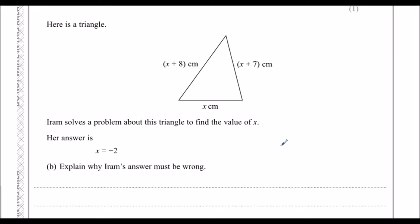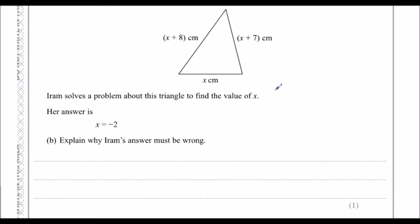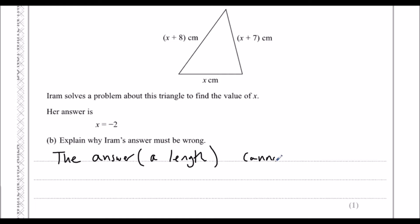Here is a triangle. Iram solves a problem about this triangle and gets x equals negative 2. Explain why this must be wrong. We can't have a negative length — a length cannot be negative — so the answer must be wrong.